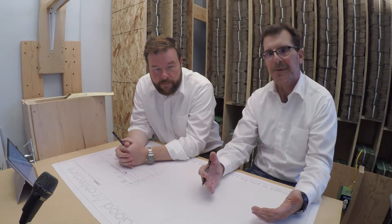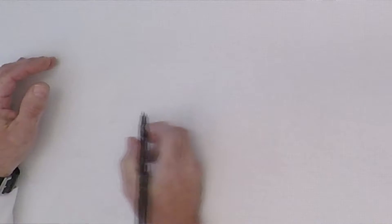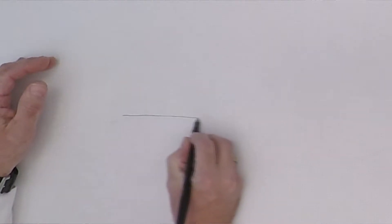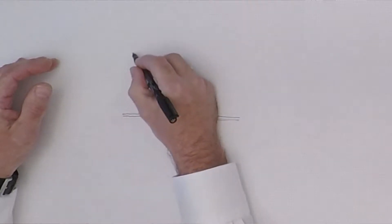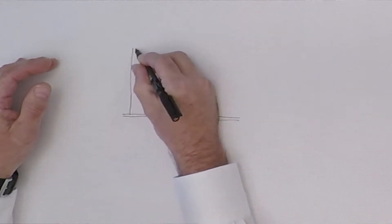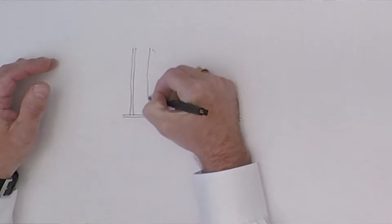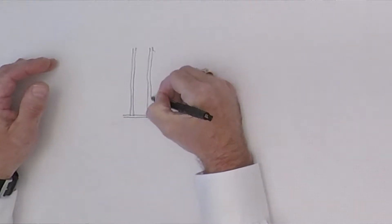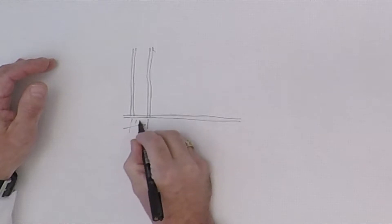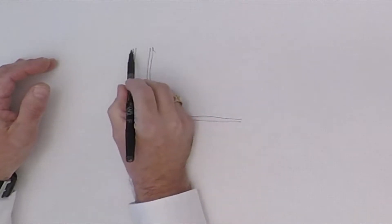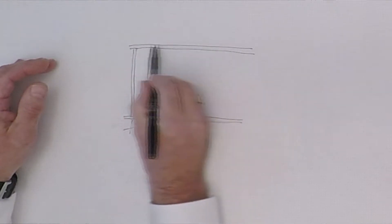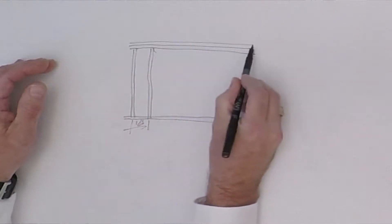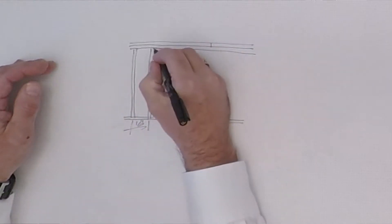A typical wall built up on top of the subfloor or on top of a concrete slab would start with a bottom plate, which is a two-by material. We have vertical studs, typically at 16 inches on center. And above that would be a double top plate, made of two two-by members stacked on top of each other with staggered joints.